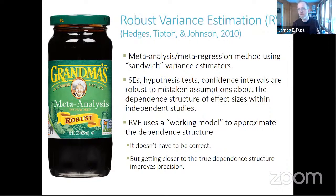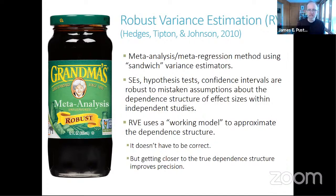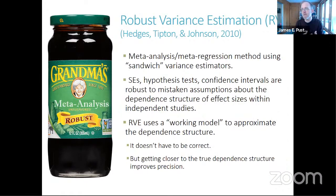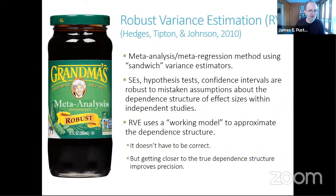You don't need to know the exact structure of the dependence between the effect sizes in order to trust your confidence intervals and standard errors. RVE is a bit like buying an extra insurance policy in case some aspects of your model are imperfect or flawed. RVE uses what's called a working model, which describes tentative assumptions about the structure of dependence between effect sizes — for example, the degree of correlation between effect sizes estimated from the same sample. Using a working model that's close to correct is advantageous because it improves the precision of your estimates, giving you smaller standard errors.